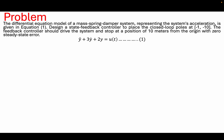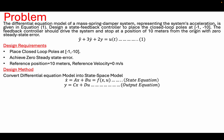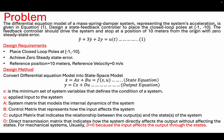First, note your design requirements. We have to convert our differential equation model into a state space model, which has two equations: the state equation and the output equation. The state equation models how the state of the system changes over time as a function of the current state and the applied control input, while the output equation gives the relationship between the output and the state. The D matrix is the direct transmission matrix, and for mechanical systems D is usually taken as zero.